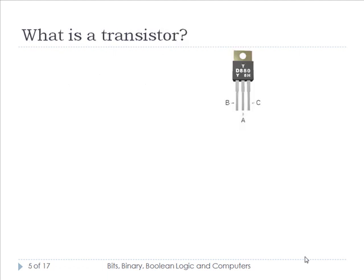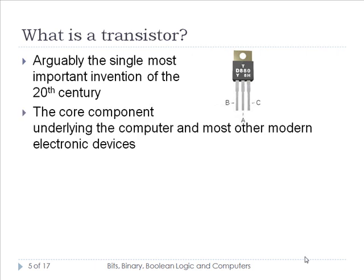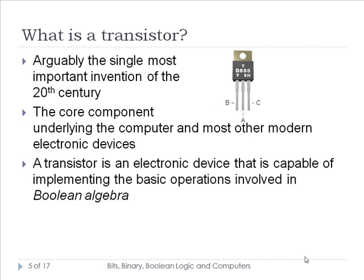Let's talk a little more about a transistor. This is arguably the single most important invention of the 20th century. The core component underlying the computer is a transistor, and most other modern electronic devices are built using transistors. A transistor, in simple terms, is an electronic device capable of implementing the basic operations involved in Boolean algebra.